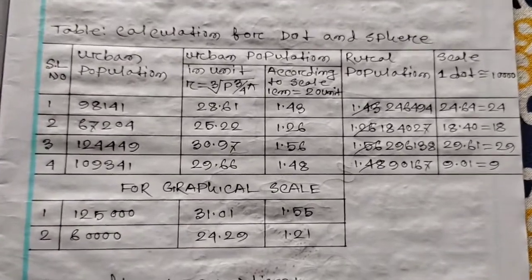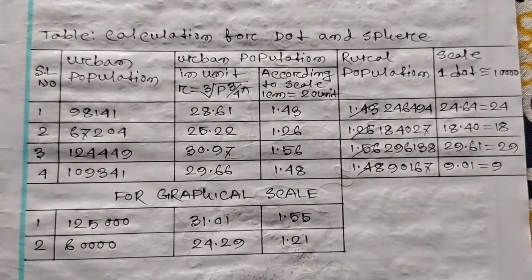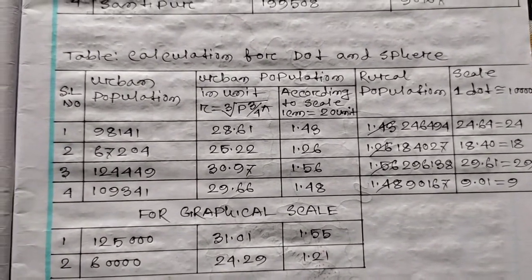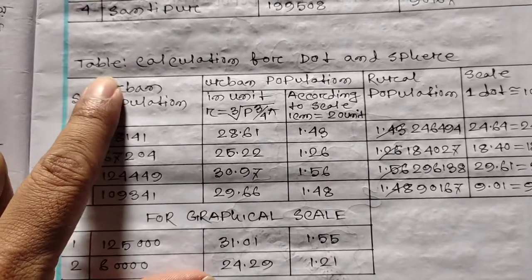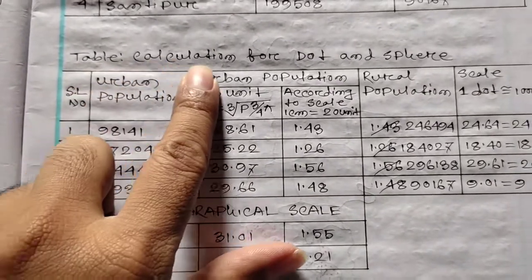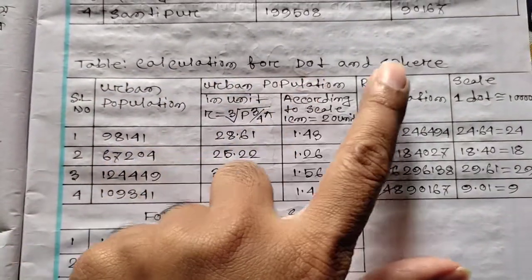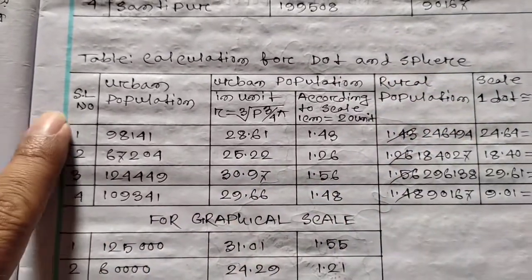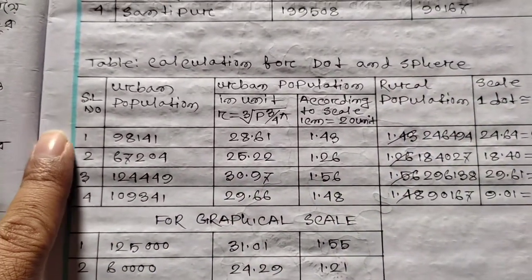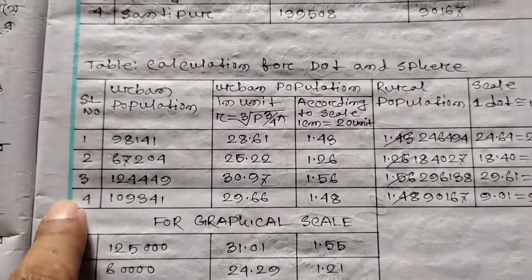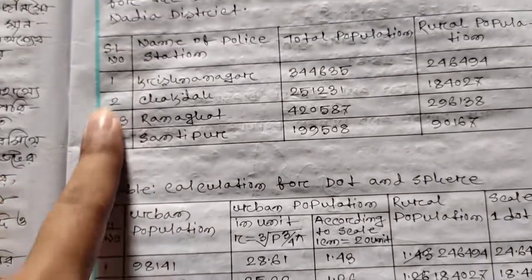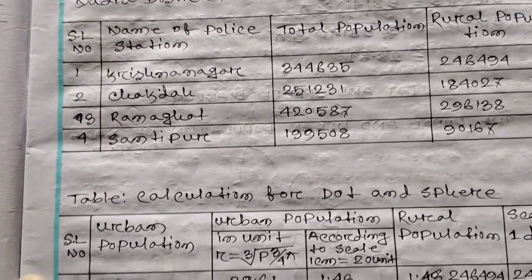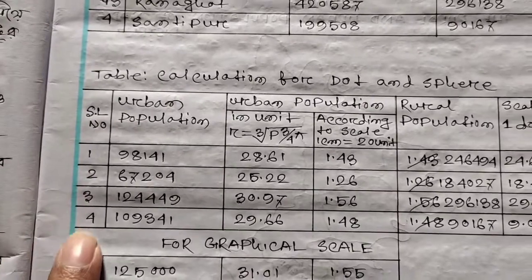Now, the calculation for Dot and Sphere. Let me write this as a serial number — 1, 2, 3, 4. I had a question for the serial number, then I wrote the serial number.